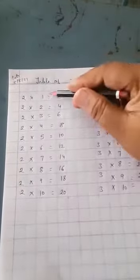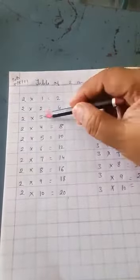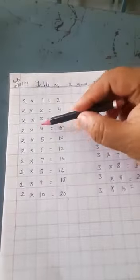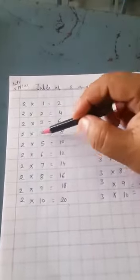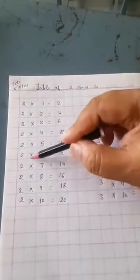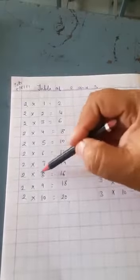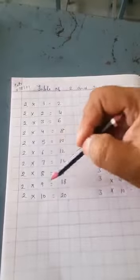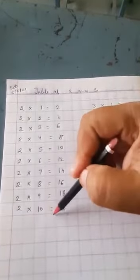Again, 2 ones are 2, 2 twos are 4, 2 threes are 6, 2 fours are 8, 2 fives are 10, 2 sixes are 12, 2 sevens are 14, 2 eights are 16, 2 nines are 18, 2 tens are 20. Now the table of 3.